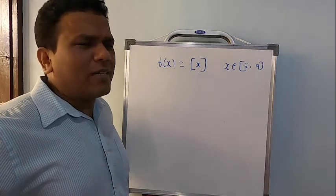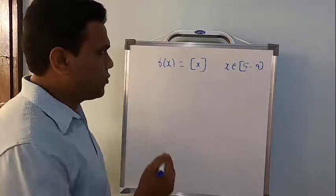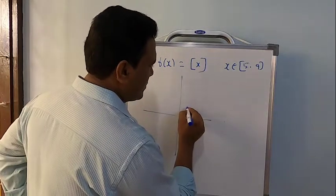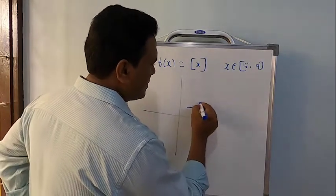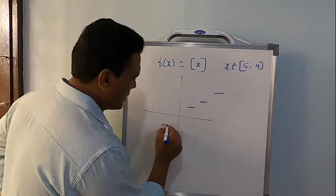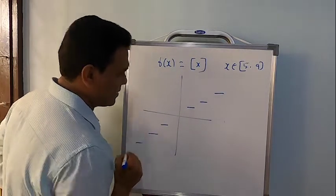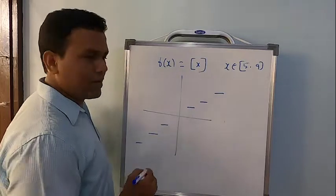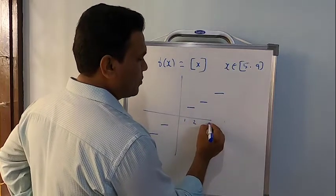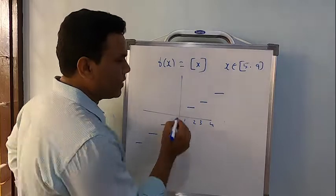I will tell you two methods. The first method is the graphical method. If you remember, the graph of the greatest integer function looks something like this — most of you remember the graph of this. So this will be one, this will be two, this will be three, this will be four.